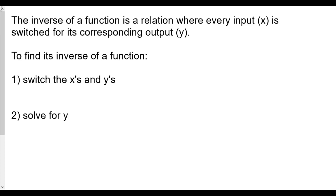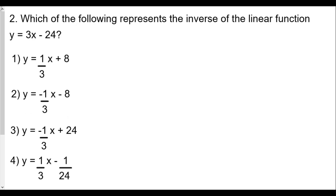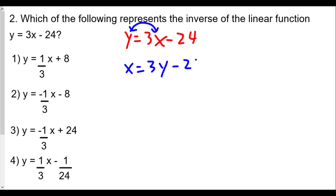If they give the function as f(x), rename f(x) as y, then switch x and y and solve for the new y. Here, since we have y equals 3x minus 24, our first step is to switch the x and y values, giving us x equals 3y minus 24.